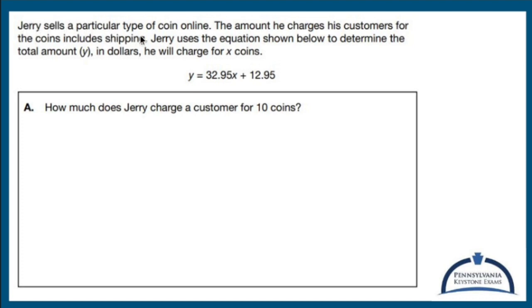Jerry sells a particular type of coin online. The amount he charges his customers for the coins includes shipping. How nice. Jerry uses the equation shown below to determine the total amount Y in dollars he will charge for X coins.